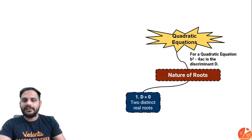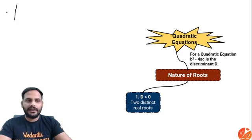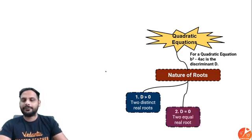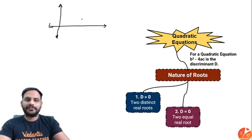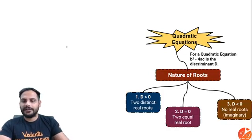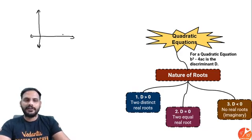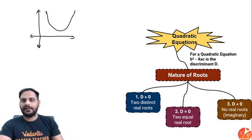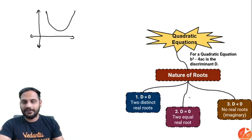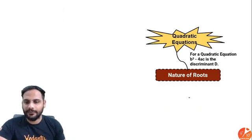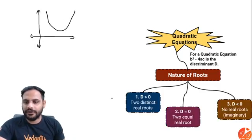If the discriminant is greater than 0, there are two distinct roots and the graph intersects the x-axis at two different points. When D equals 0, there are two equal roots and the graph just touches the x-axis at one point. When D is less than 0, there are no real roots, so the graph does not touch the x-axis at all. The graph for a quadratic equation is a parabola. D greater than 0: two distinct real roots; D equal to 0: two equal roots; D less than 0: no real roots or imaginary roots.